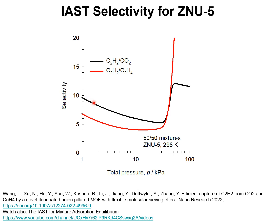The IAST calculations are shown here for 50-50 mixtures of C2H2-CO2, shown in black, and the red line shows the adsorption selectivity for mixtures of C2H2-CO2 and C2H4-CO2. The details of the IAST calculations are available in this paper, Nano Research 2022. Watch also my YouTube video on the IAST calculations for mixture adsorption equilibrium. We now demonstrate that the inflections in isotherms and selectivities have severe consequences for mixture separations in fixed beds packed with the flexible MOF ZNU-5.